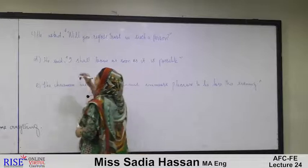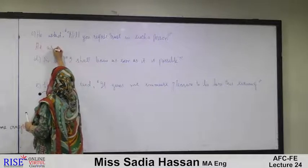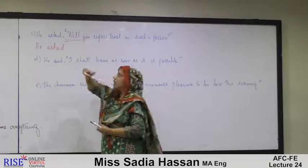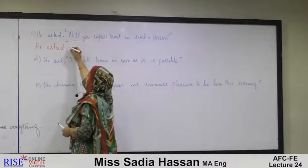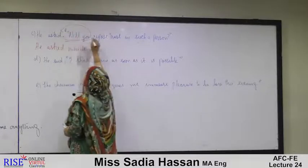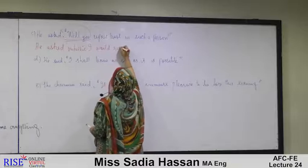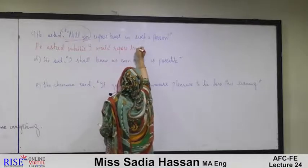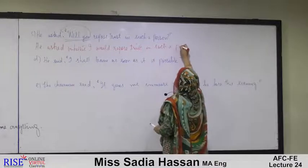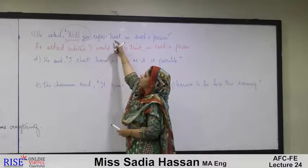Sentence c is also an interrogative sentence. The reported speech starts with a modal verb 'will,' so we change it with 'whether' or 'if.' He asked whether — 'you' has no object so it changes to first or third person. The result is: he asked whether I would repose trust in such a person. 'Will' changes to 'would.'